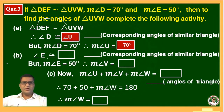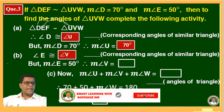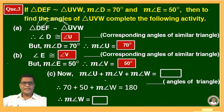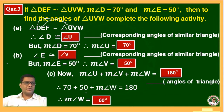Angle E is congruent to angle V, so angle V is also 50 degrees — corresponding angles of a similar triangle. Now, the sum of all three angles of the triangle is 180 degrees. So 70 plus 50 is 120 degrees, and 180 minus 120 is 60 degrees. This way you can complete the activity.